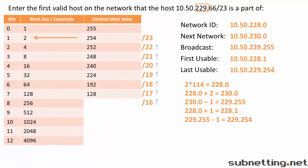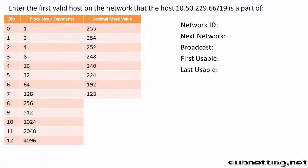To make sure it's clear, let's go through the question one more time, but this time we'll use a subnet mask of slash 19 instead of slash 23. Enter the first valid host on the network that the host 10.50.229.66/19 is a part of. Since 19 is between 16 and 24, we know our interesting octet is the third octet.